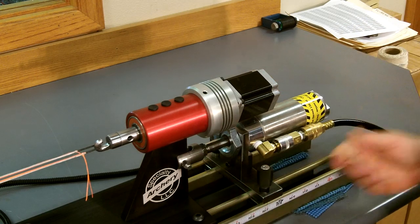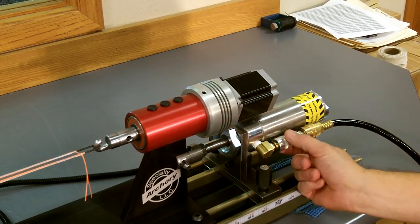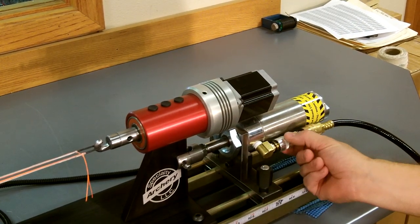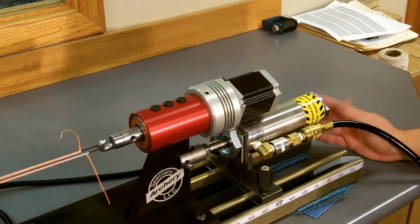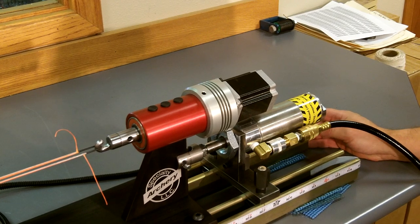To apply the pressure, all you simply do is slide our quick on-and-off valve forward, and that will apply your pressure to your string. The pressure applied to your string is determined by the air pressure coming out of your air compressor.